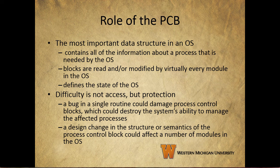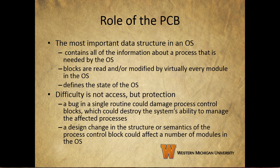Finally, let's talk about the role of the process control block. It is arguably the most important data structure in an operating system — it contains all the information about a process that's needed by the operating system. Blocks are read and or modified by virtually every module in the operating system, and they define the state of the operating system. Our potential problem lies not in accessing process control blocks but in protecting them. A bug in a single routine could damage process control blocks, which could destroy the system's ability to manage the affected processes. A design change in the structure or semantics of the PCB could affect a number of modules in the OS. It's very important that we have a good understanding of the process control block, what it does, and how it does it.